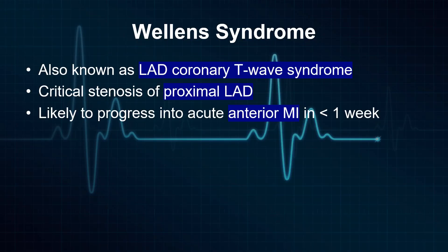Wellens syndrome, also known as LAD coronary T-wave syndrome, is a specific pattern observed on ECG that indicates a critical blockage in the left anterior descending coronary artery, LAD.